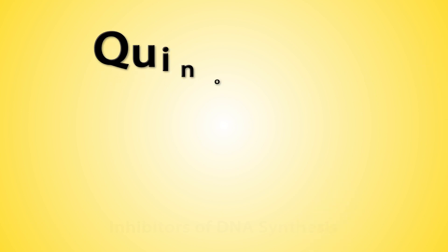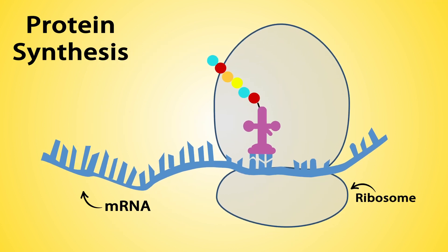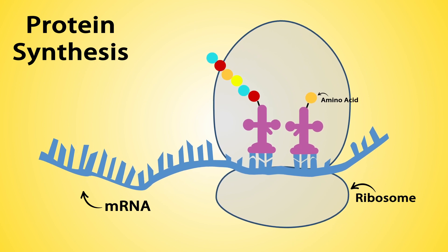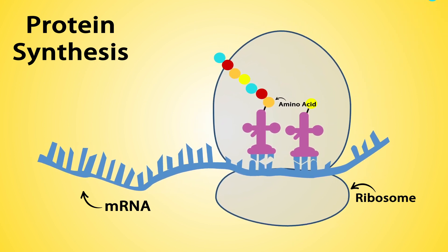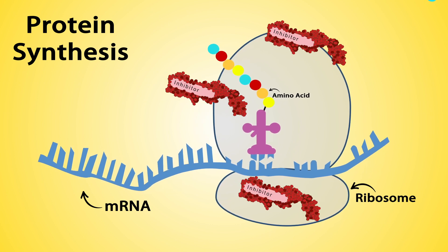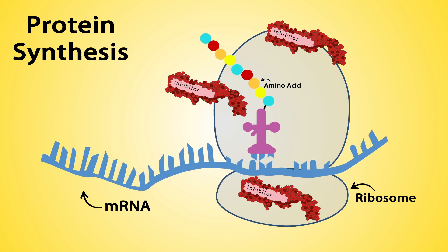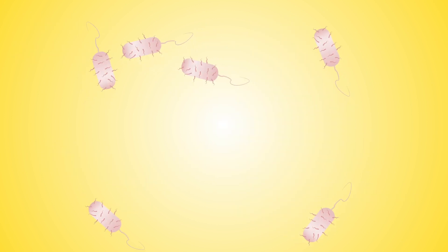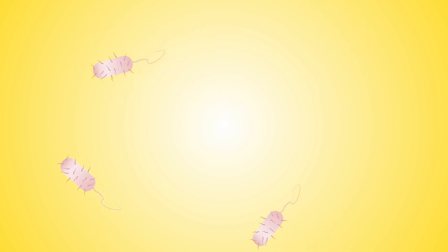Examples include quinolones, metronidazole, and rifampin. Enzymes and cellular structures are primarily made of proteins. Protein synthesis is an essential process necessary for the multiplication and survival of all bacteria cells. Inhibitors of bacterial protein synthesis include several types of antibacterial agents. These target protein synthesis by binding to various ribosomes, resulting in the disruption of bacteria's normal cellular metabolism and consequently leading to the death of the organism or stopping of its growth.